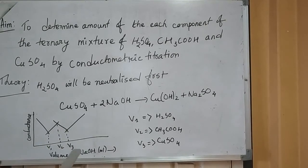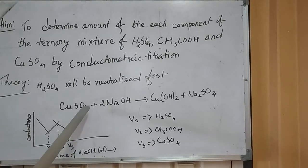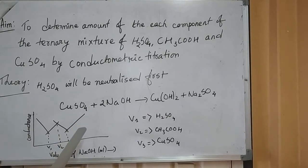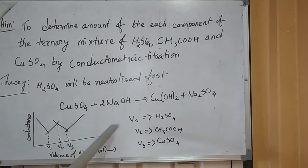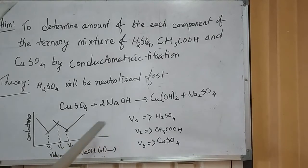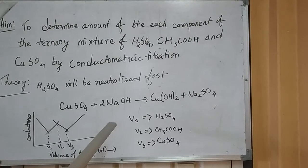Consequently, conductance decreases very slowly until the precipitation is complete. Thereafter, the conductance rises due to the excess of sodium hydroxide added. Thus, the titration curve will give three breaks: the first corresponds to sulfuric acid, the second corresponds to acetic acid, and the third corresponds to copper sulfate.